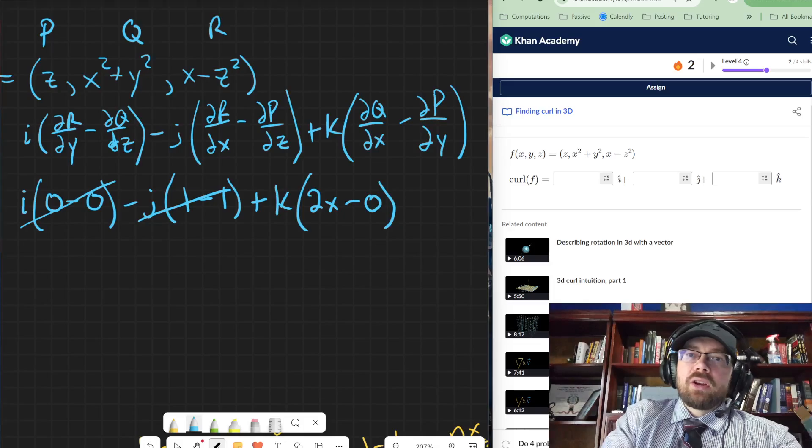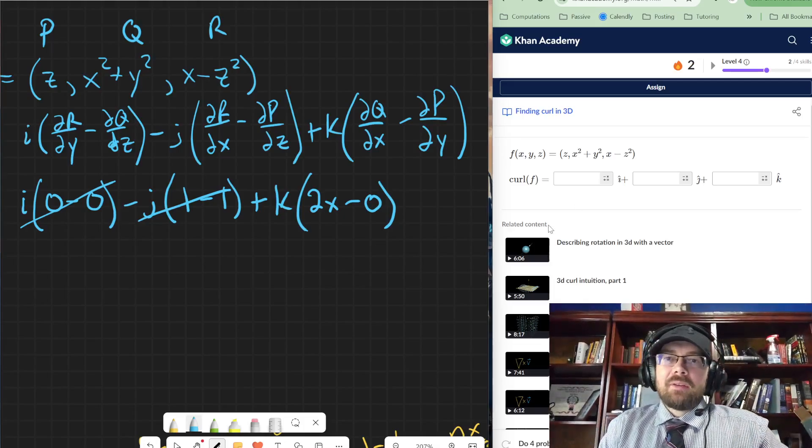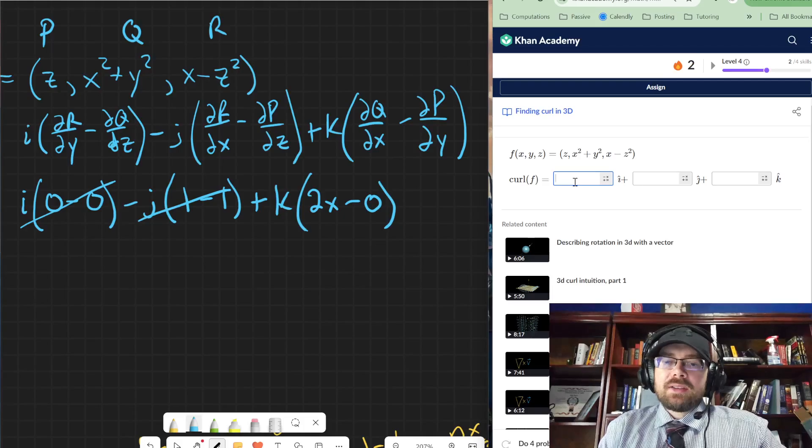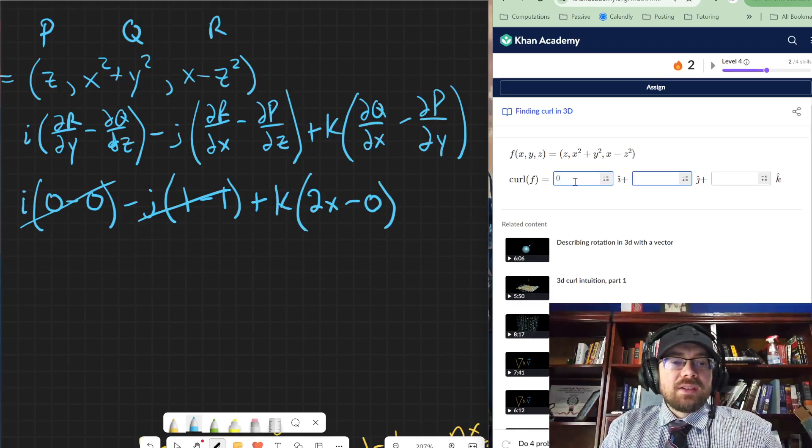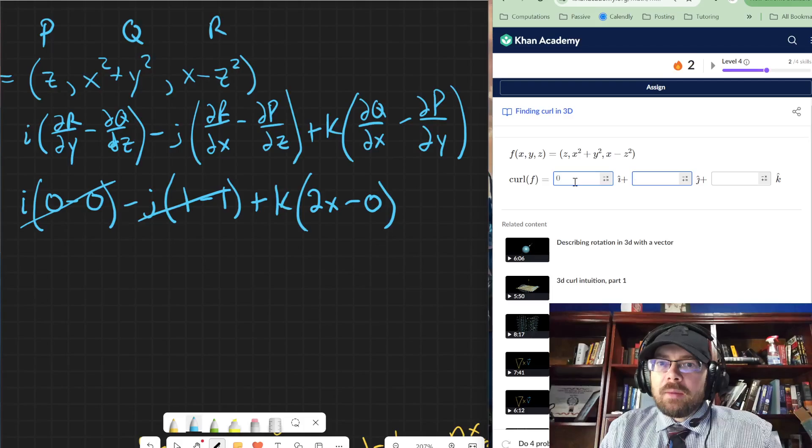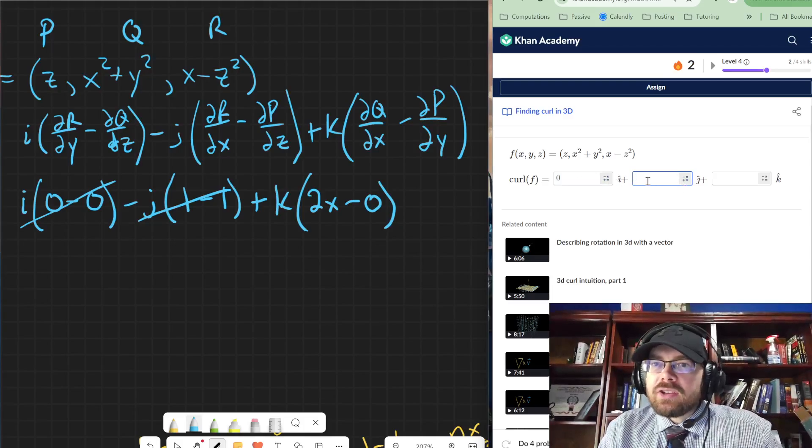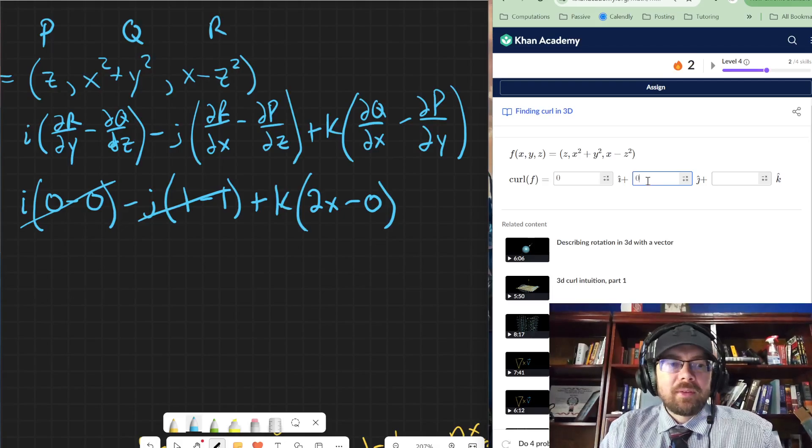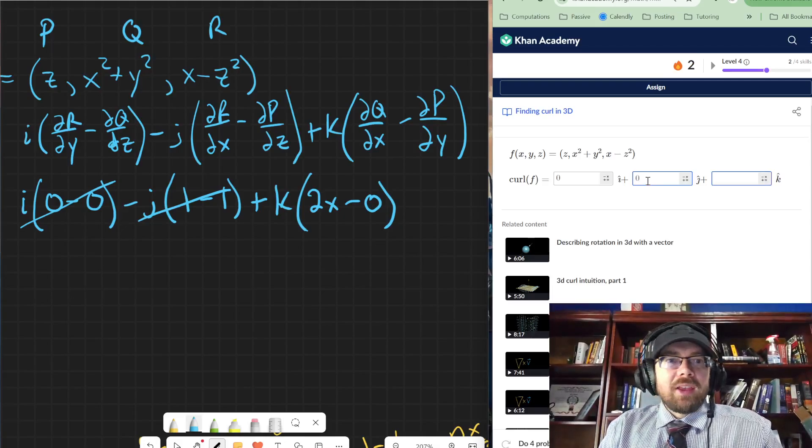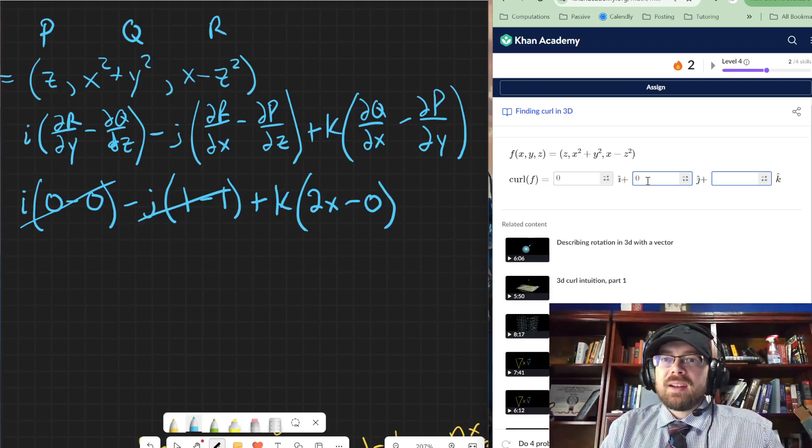So basically, the curl is that we have a zero in the i direction. So we have a zero i. So I'm typing it in now. A zero j. And then for the k vector, we've got two x.